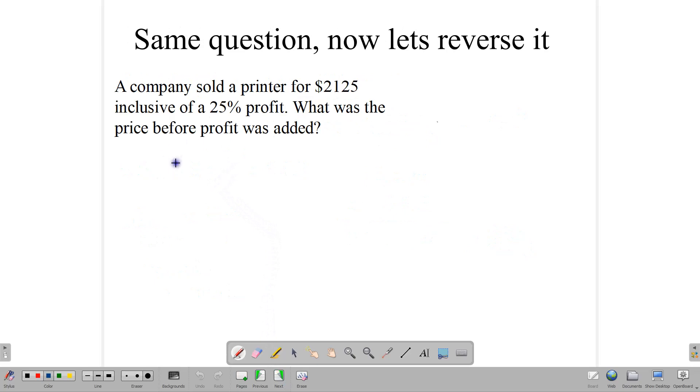What many students do, not knowing, because that background would not have been given, is that they go ahead and find 25% of $2,125, and working this out using your calculator or otherwise, you would get $531.25, and so to finish the question, the student would normally write $2,125 minus $531.25.